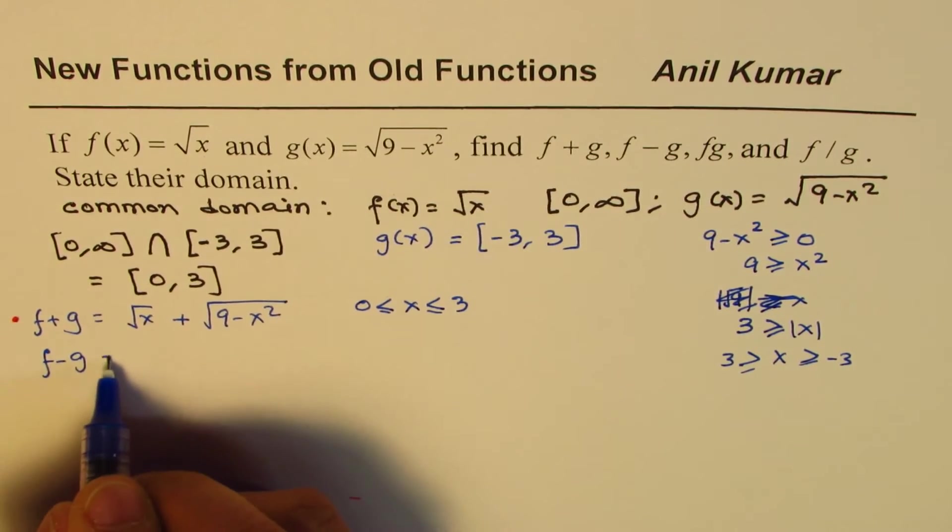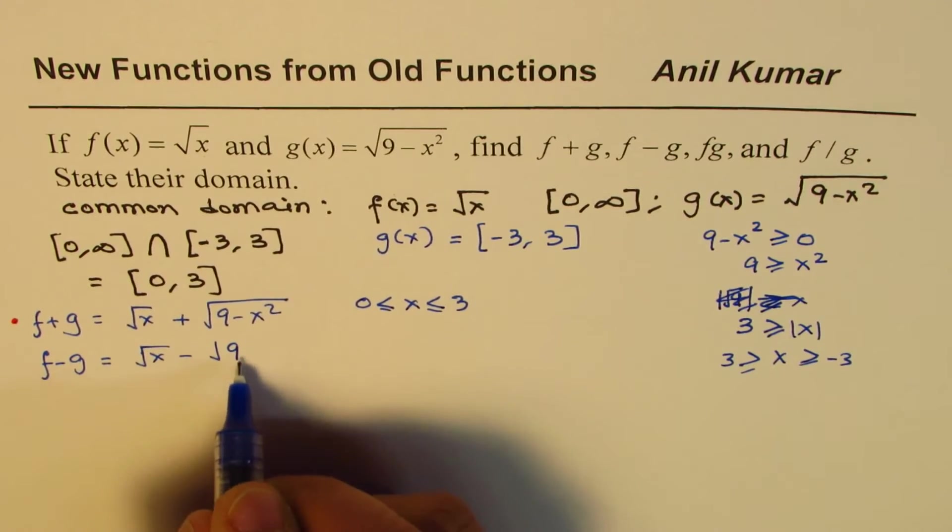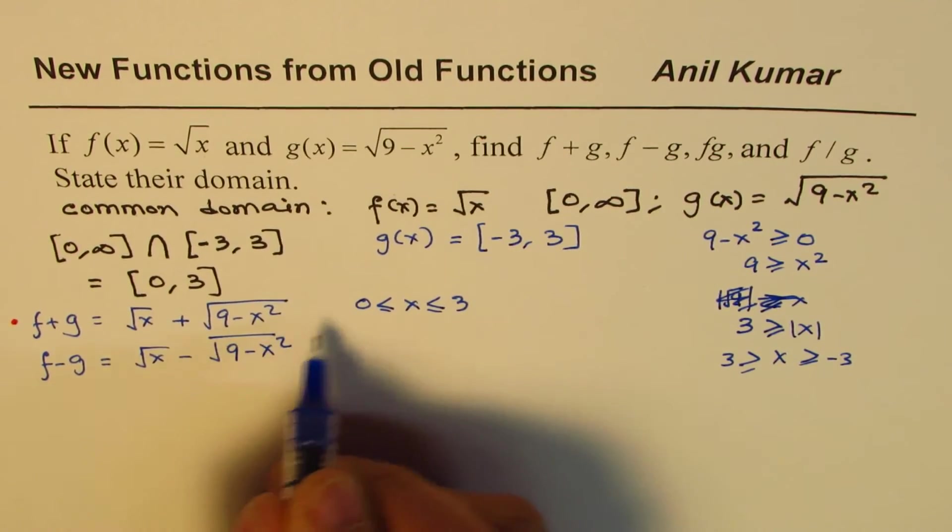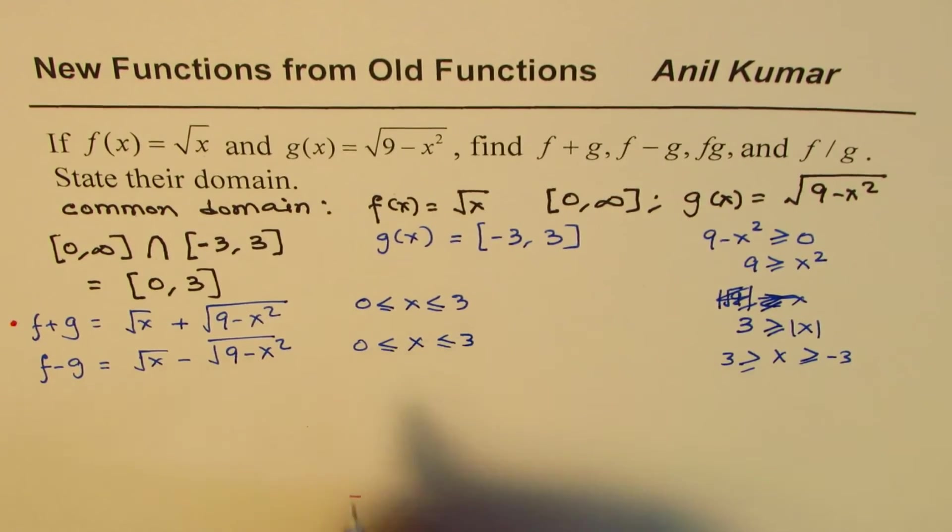For f minus g, it will be square root of x minus square root of 9 minus x squared, and this also the domain will be from 0 to 3.